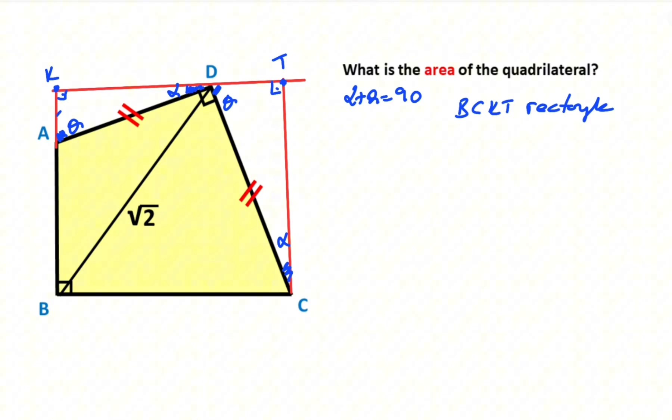After that, if you focus on this triangle, this triangle and this triangle have same angles and notice that opposite sides of the 90 degrees are equal. It means these two triangles are congruent. So, triangle AKD and triangle DTC are congruent.